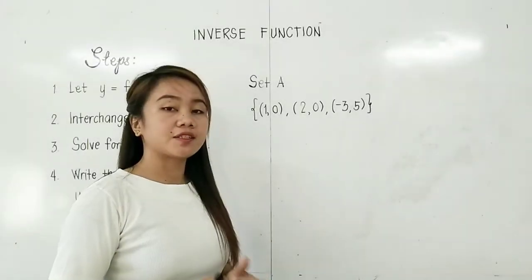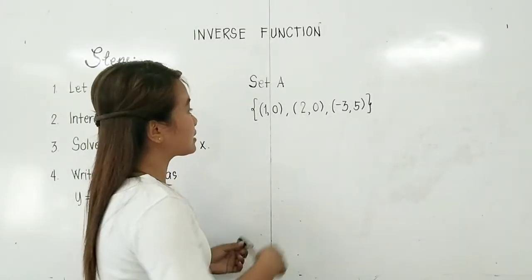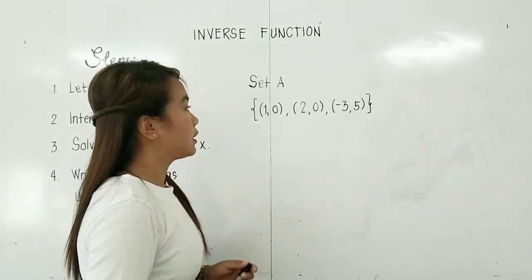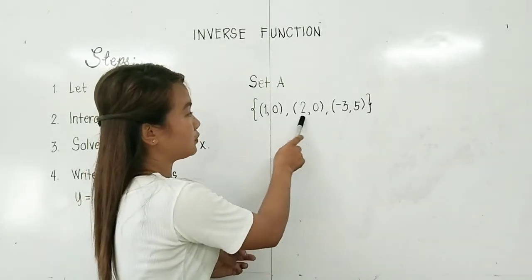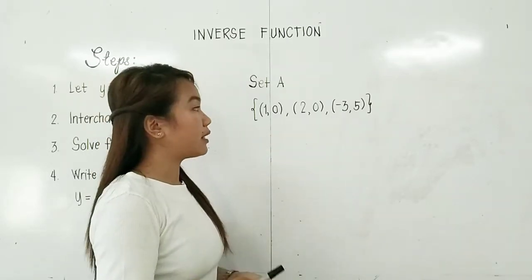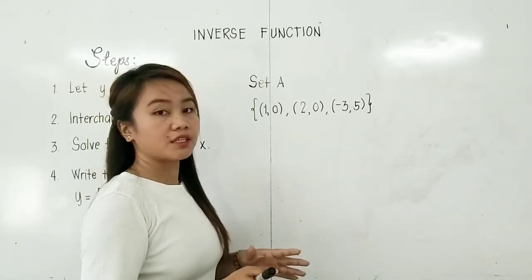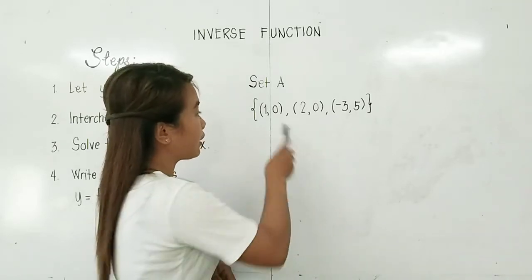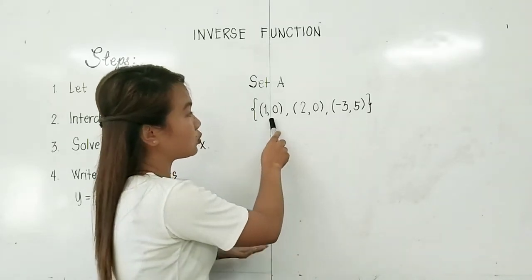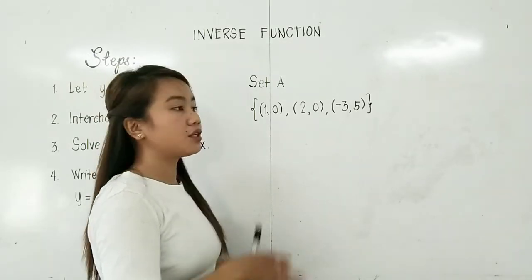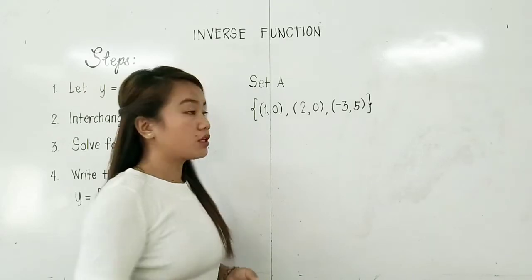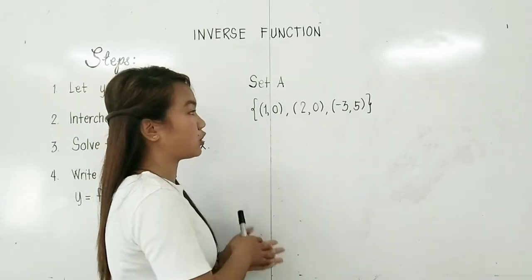Let's start from the basic. We have this set of ordered pairs as our example: (1, 0), (2, 0), and (−3, 5). We will get the inverse of this function. By the way, this set of ordered pairs is an example of a many-to-one relation, and as you will remember, a many-to-one relation is an example of a function. So this is a many-to-one function.